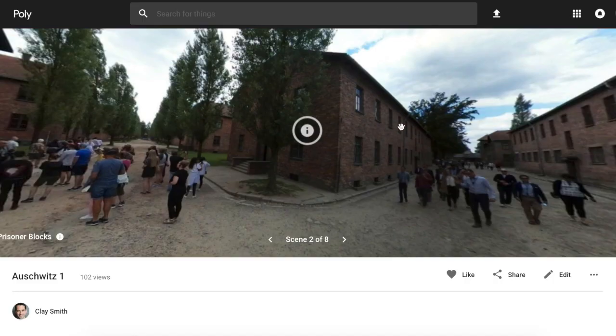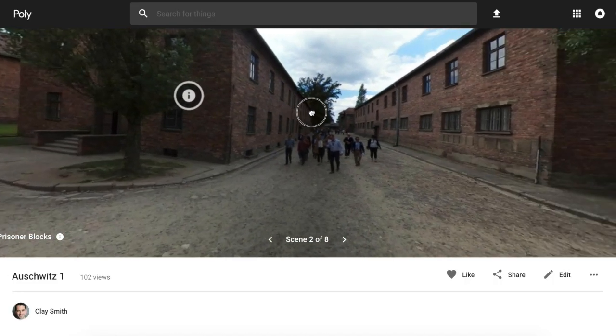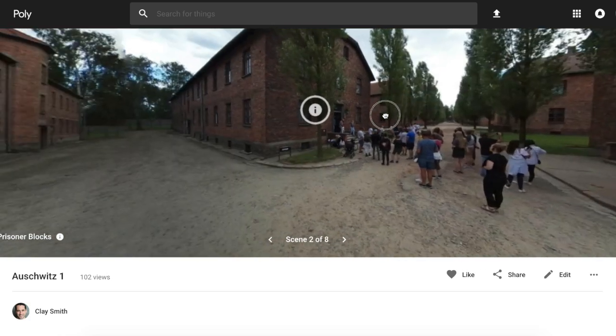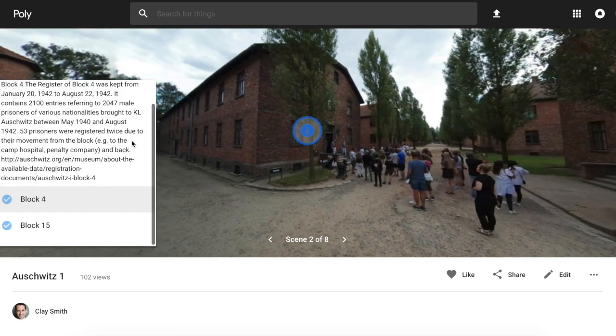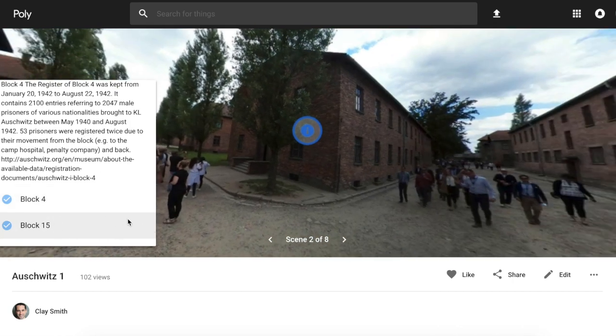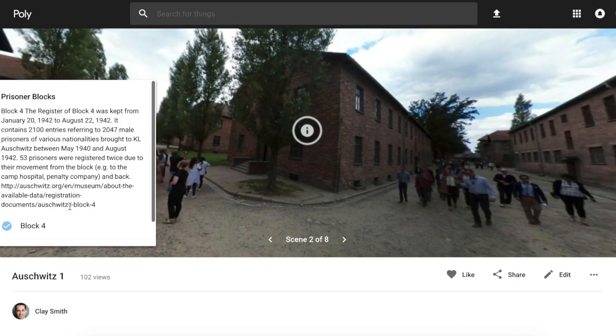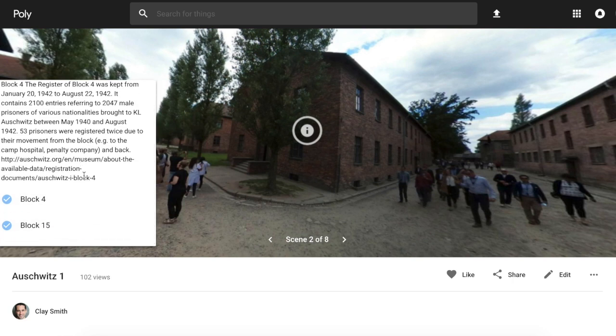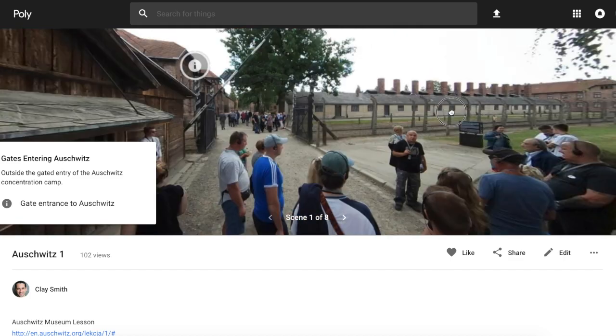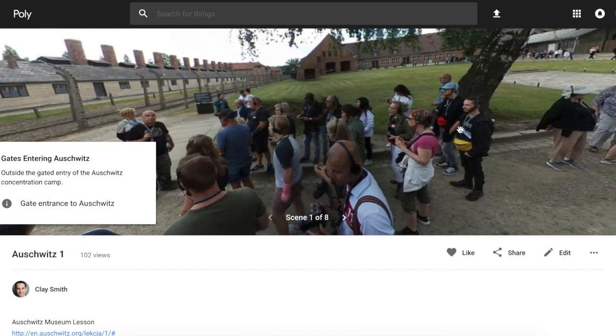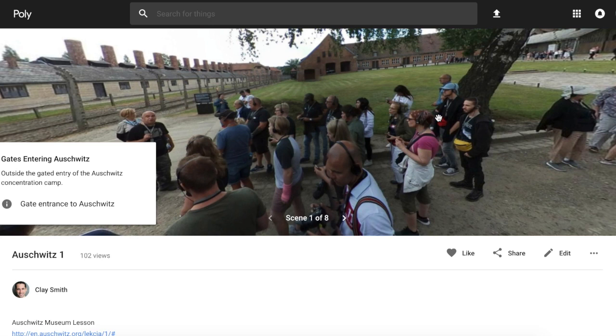My wife and I recently spent some time in Europe, and this is a tour I created of Auschwitz for students. Each of these little points here has information. You can also drive to that information, so you know exactly what you're looking at within the tour. It's got multiple scenes, and you can certainly look around with your mouse, or if you have a 360 device or a headset, you can use that to look around.